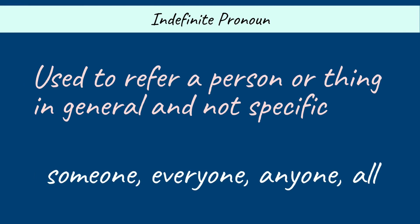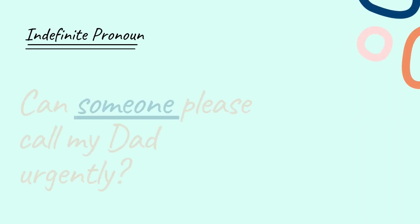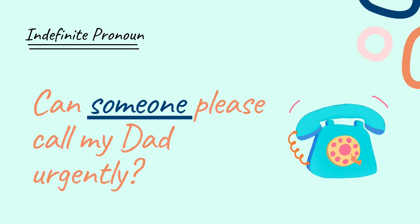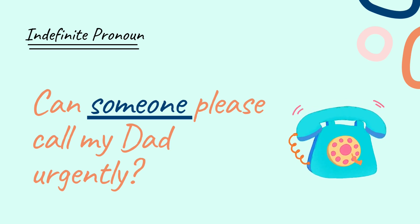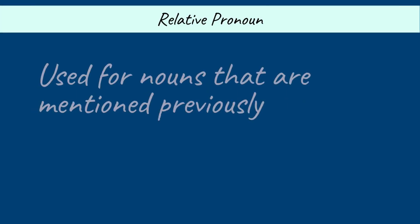Number two: Indefinite pronoun. It is used to refer to a person or thing in general and does not point to a specific person or thing. Examples: someone, everyone, all. For example: 'Can someone please call my dad urgently?' Here, the indefinite pronoun 'someone' is used to refer to a person in general.